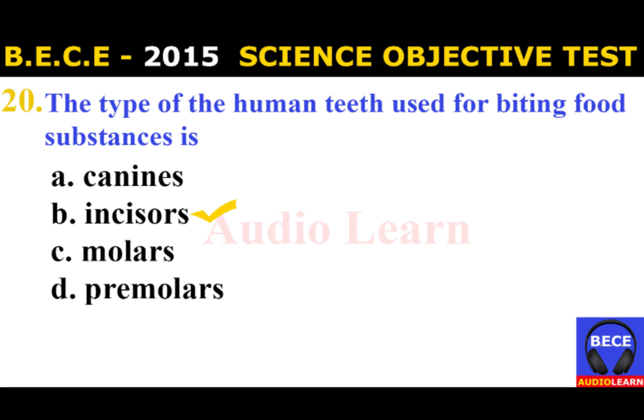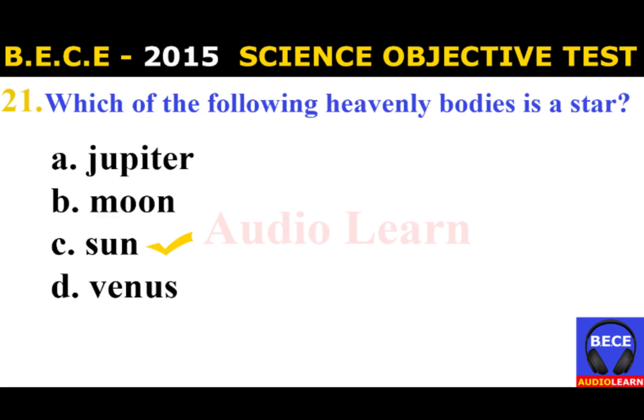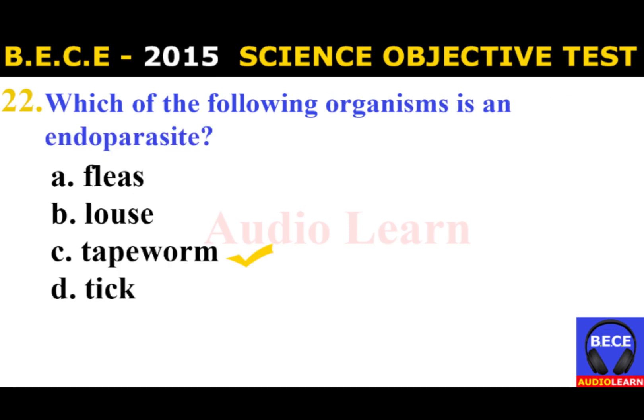Number 21: Which of the following heavenly bodies is a star? A. Jupiter, B. Moon, C. Sun, D. Venus. The answer is C. Sun. The heavenly body that is a star is the Sun.